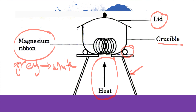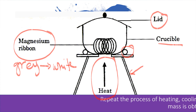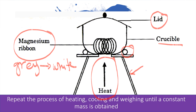To determine whether the magnesium has completely reacted, repeat the process of heating, cooling, and weighing until a constant mass is obtained. You repeat these three steps — heating, cooling, and weighing — until a constant mass is obtained, to ensure that magnesium is completely reacted.